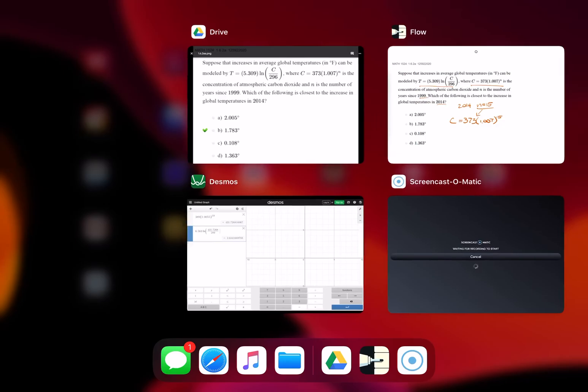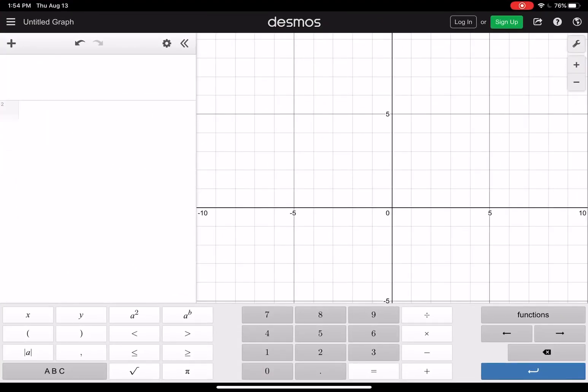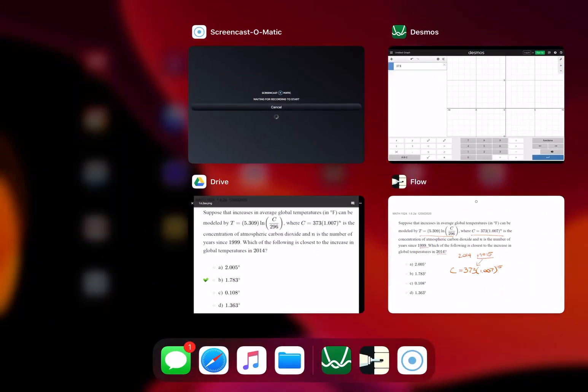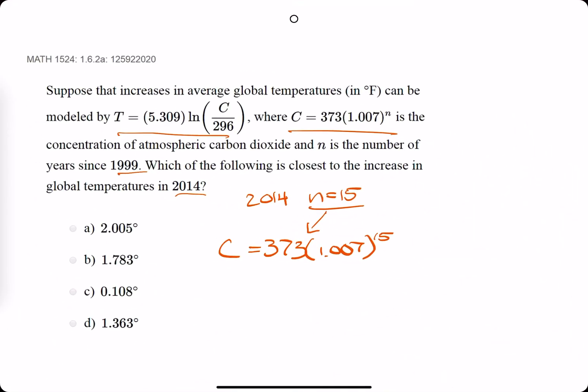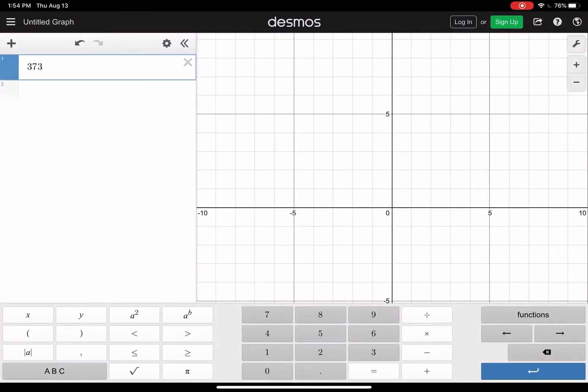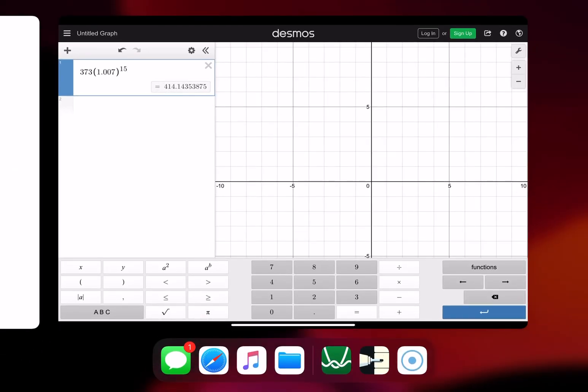We plug this n into Desmos: 373 times 1.007 to the 15. Wrong button. Times 1.007 raised to the power of 15. So far so good. We have 414.14.